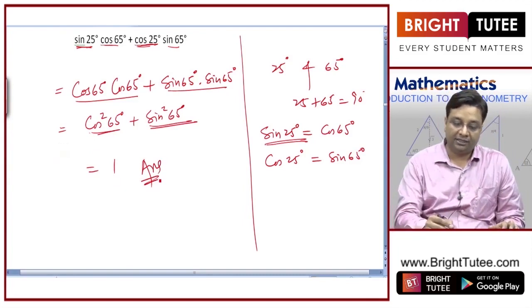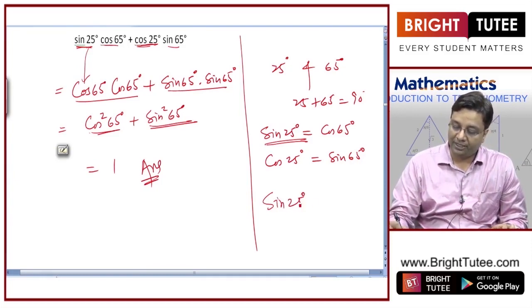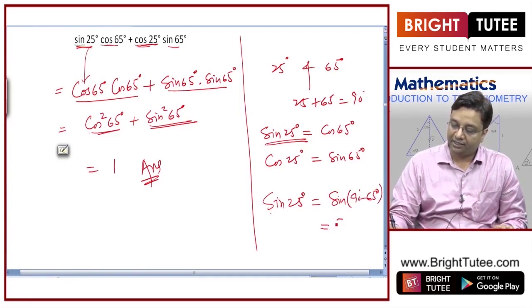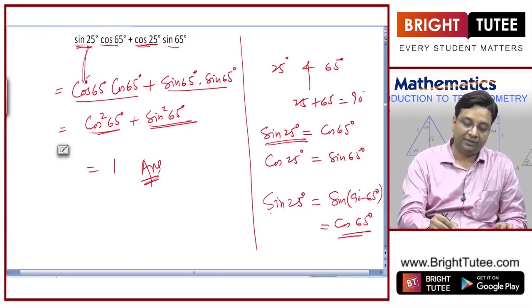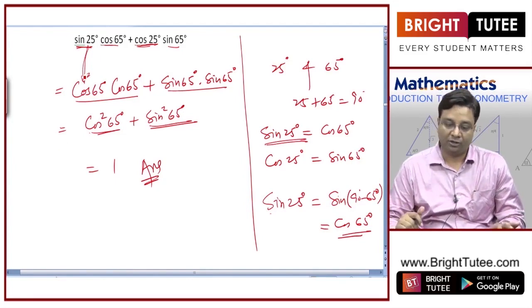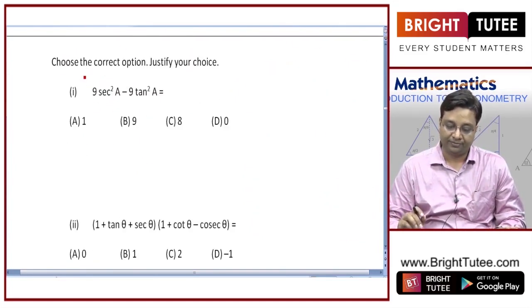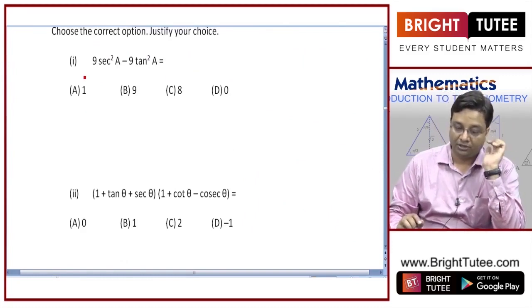The conversion is: sin 25° = sin(90° - 65°) = cos 65°. That is why sin 25° times cos 65° becomes cos²65°. I hope you have understood this question.